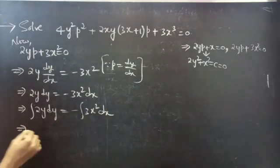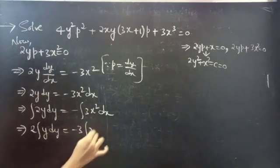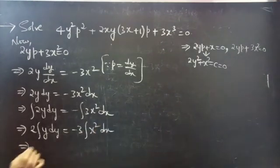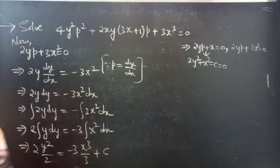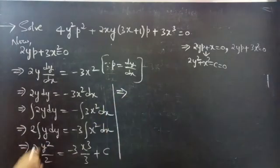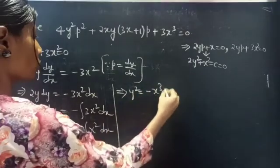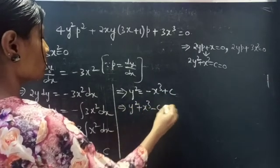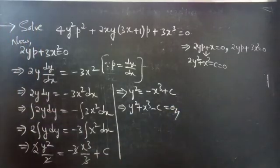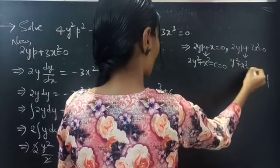Take the constants outside the integral. 2 · integral of y dy = −3 · integral of x²·dx = −3·(x³/3) + c. The 3 and 3 cancel, and the 2 gets cancelled, giving y² = −x³ + c. Then y² + x³ − c = 0.